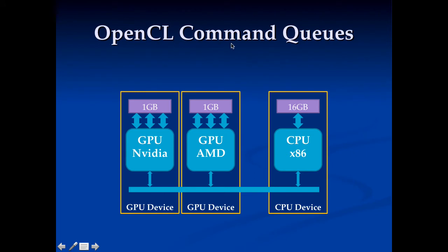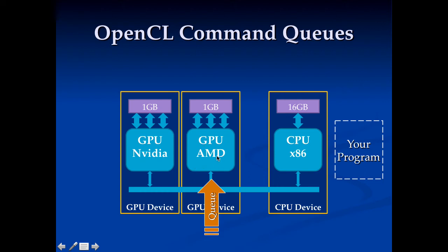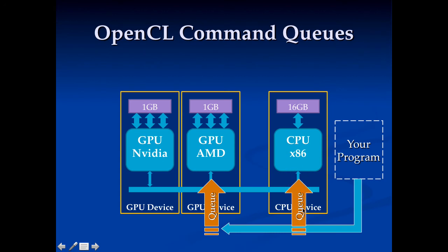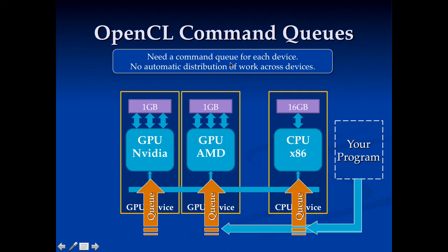The last concept to cover here is command queues. I've got three OpenCL devices — two GPUs and one CPU — and I want to send work to them. My program is running on the CPU, but remember the CPU can also be a device. If I want to submit work to the AMD GPU, I need to create a command queue. My program puts work into this queue, and eventually the work will reach the top of the queue and be executed on the device. If I want to execute on another device, say the CPU, I have to create another command queue. Same thing for a third device. This means we need a command queue for every device, and there is no automatic distribution of work across devices — my program has to manually divide up the work between devices.